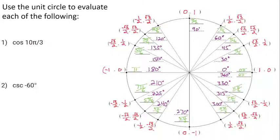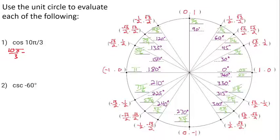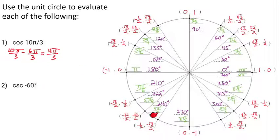These practice problems add a small wrinkle. For cosine of 10π/3, you might look at the unit circle and not find 10π/3 listed. That's because 10/3 is greater than 2, so it exceeds 2π and isn't one of our common angles. We can find a coterminal angle by subtracting 2π. Converting 2π to thirds: 2π = 6π/3. So 10π/3 − 6π/3 = 4π/3, which is a unit circle angle. To find cosine of 4π/3, we look at the x-coordinate, which is −1/2.